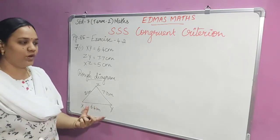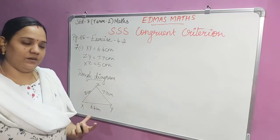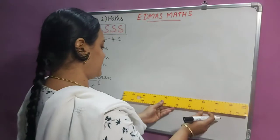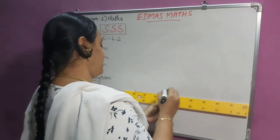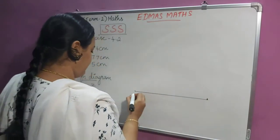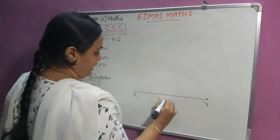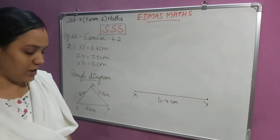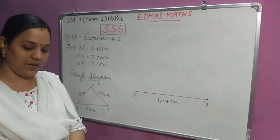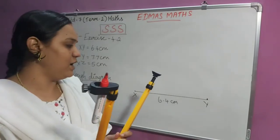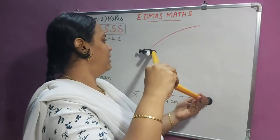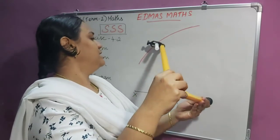Using this rough diagram I am going to construct the triangle. First, whenever we draw a triangle we have to draw the base first. So I am going to draw the base XY equal to 6.4 centimeters. For that, keep the dot at 0 and at 6.4 centimeters and draw the line segment XY. Next, I am going to take YZ equal to 7.7 centimeters. I have taken 7.7 in my compass and I am keeping my needle on Y and cutting an arc of 7.7 centimeters.